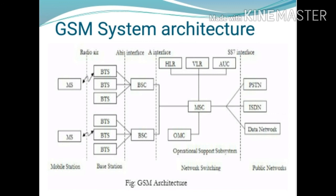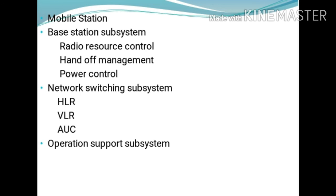Next is the Network Switching Subsystem. The main building block is the MSC, Mobile Switching Center. The MSC is responsible for communication from external networks to the mobile station with the help of the BSS. The MSC also controls the traffic of BSS and manages all GSM calls. Customer information is stored in three different databases: HLR, VLR, and AUC. HLR, the Home Location Register, is a permanent, centralized database which stores information related to the subscriber and handles location updating.